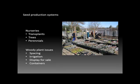Another seed production system is nursery grown. Nurseries can either take or produce transplants — trees, perennials, and other ornamental or horticultural plants. Some of the issues that come up, especially with woody plants, include getting the correct spacing, setting up and supervising irrigation systems, displaying the finished plants for sale, and deciding whether to go with containers in the nursery or transplanting the product into containers prior to sale.